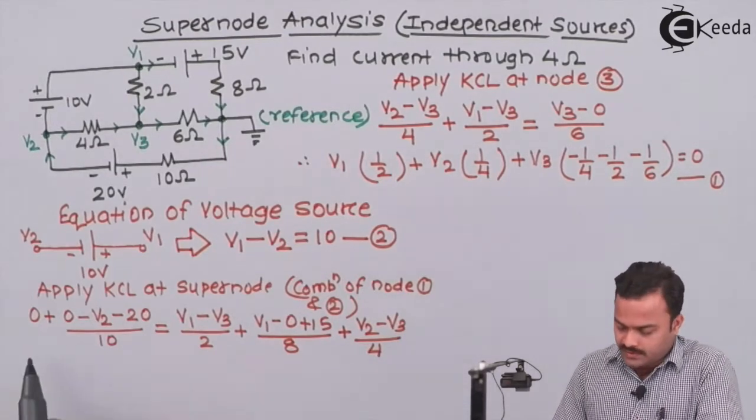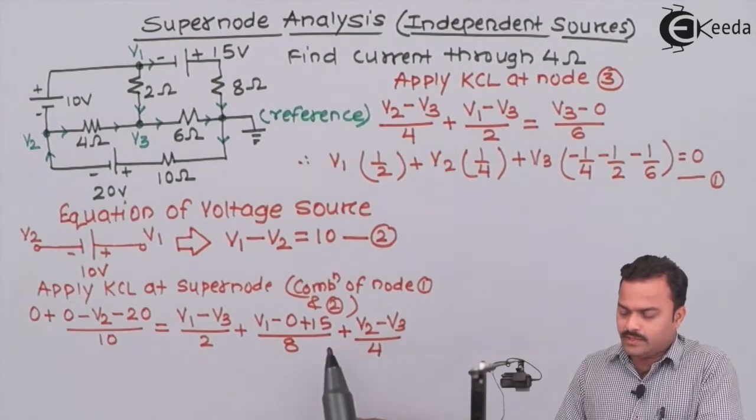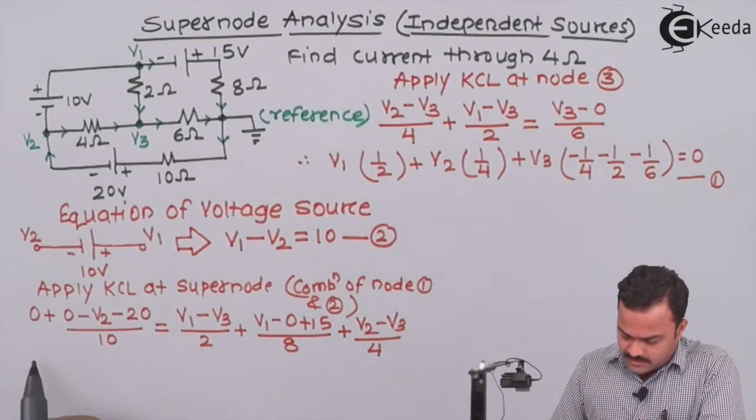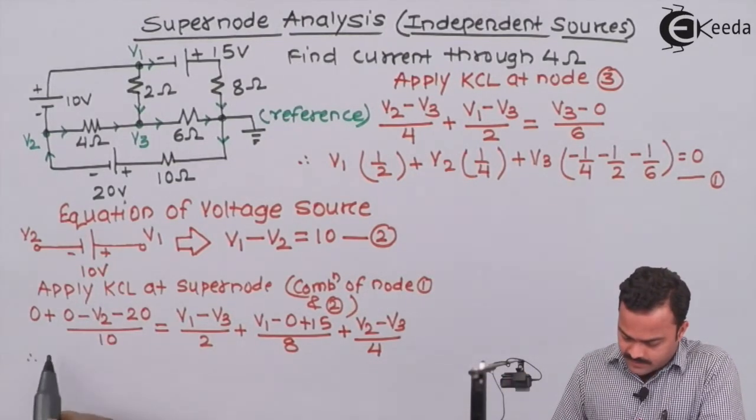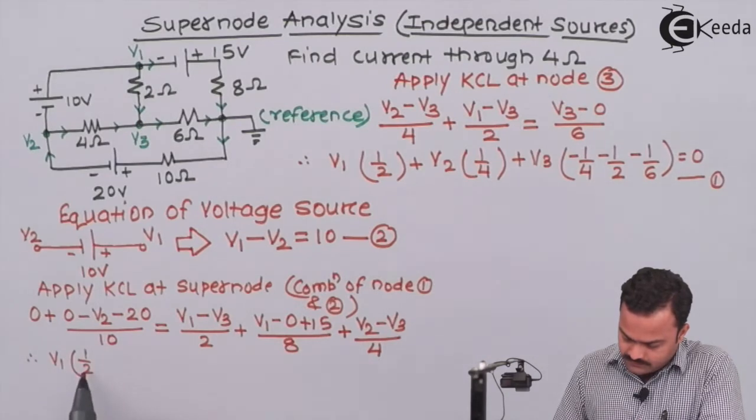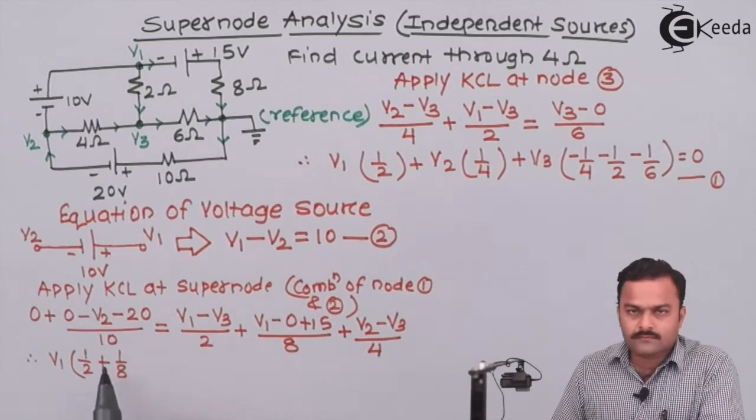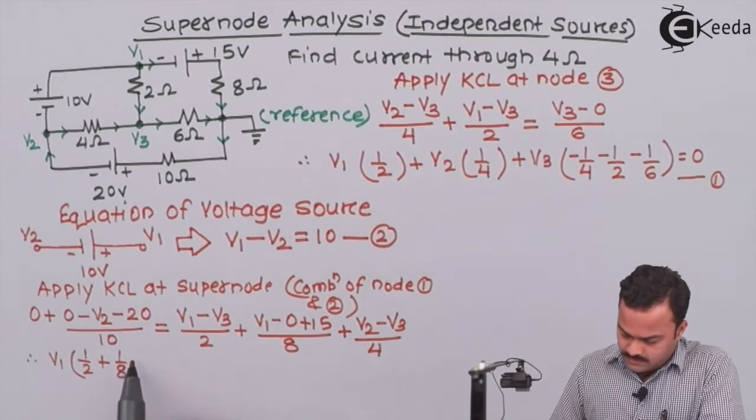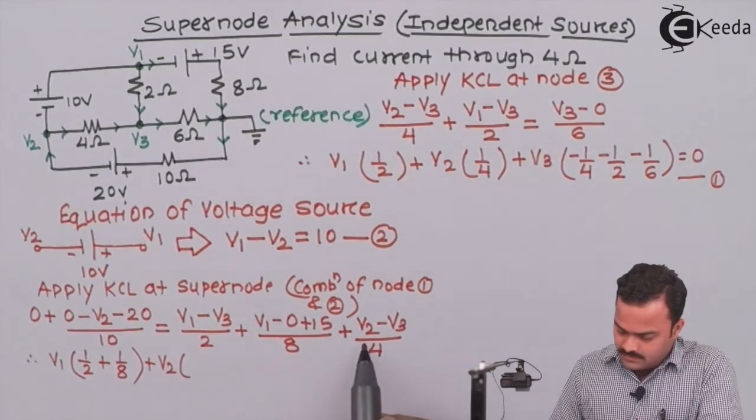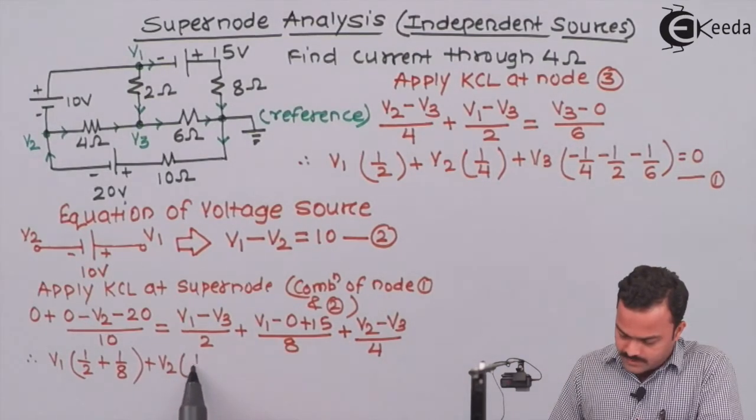So over here, after simplifying, I will get one more equation which is required for solving this problem. So if I simplify this, let's take all V1 terms together: here 1 by 2, here 1 by 8. Then for V2, here it is 1 by 4.